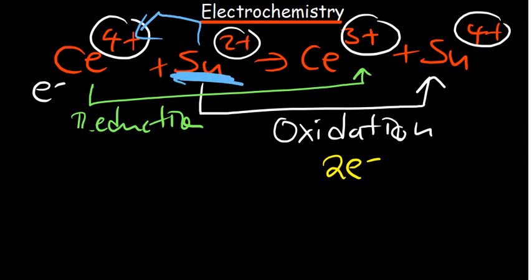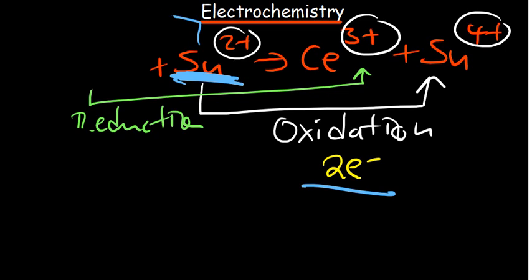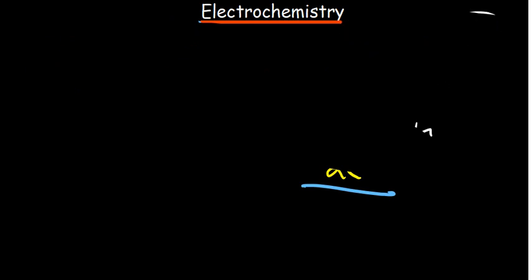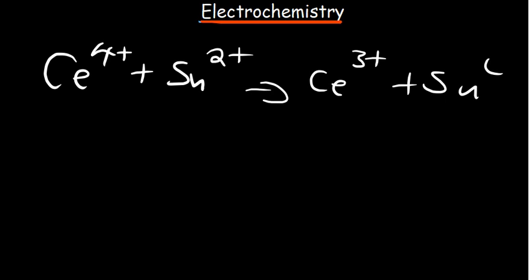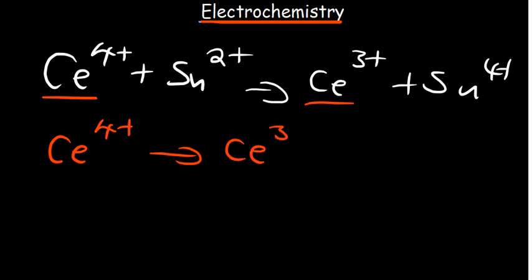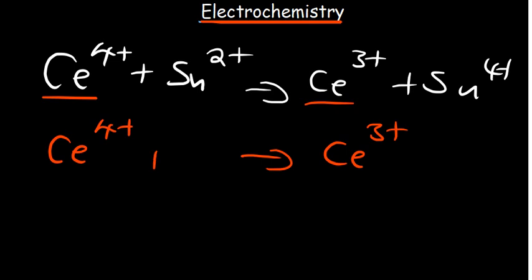Since one reactant is losing two electrons and the other is gaining one electron, we need to make sure the number of electrons lost is equivalent to the number gained. To balance the half reactions, we rewrite them separately. For the reduction half-reaction, moving from +4 to +3, we add one electron to the reactant side, since +4 plus a negative 1 gives you +3.